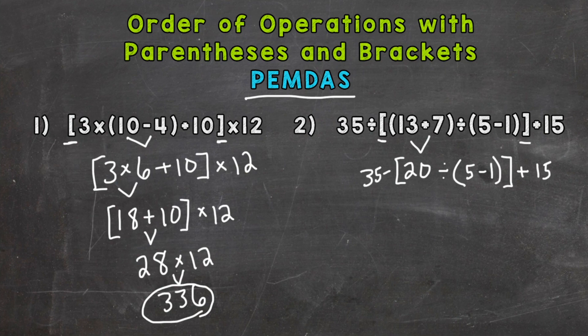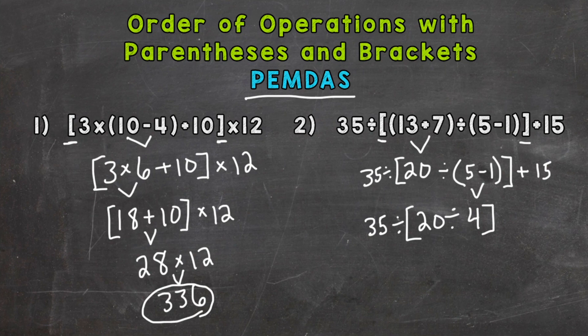Now we have 20 divided by (5 minus 1). Parentheses come next, so 5 minus 1 gives us 4. Bring down everything we did not use, including the brackets. The brackets will go away once we do all of the operations within them. So here we have 35 divided by [20 divided by 4], end brackets, plus 15. Those brackets hold the same value as parentheses — priority number one. So we need to do 20 divided by 4, which gives us 5. That gets rid of those brackets because we did all of the operations within them.